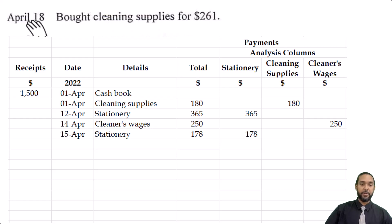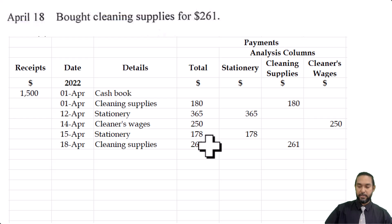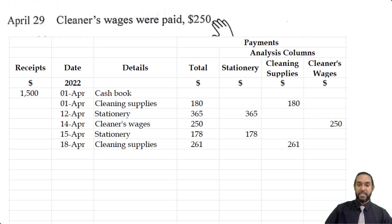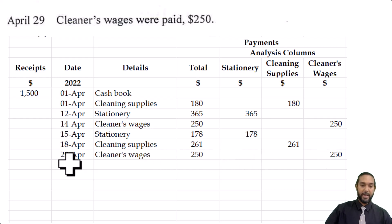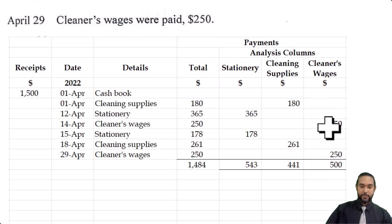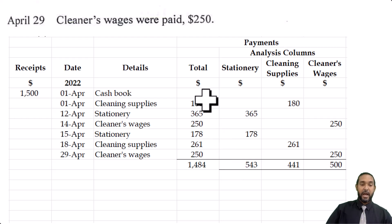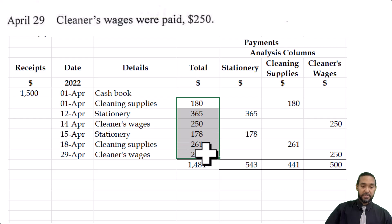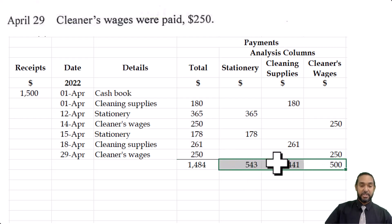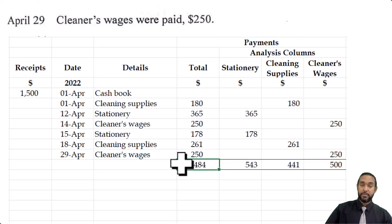On the 18th of April, cleaning supplies were bought for $261 — that goes in the cleaning supplies column, $261 in the total column, details 'cleaning supplies,' date April 18th. On April 29th, the cleaner's wages of $250 were paid — that goes under cleaner's wages column. When we total up each column: cleaner's wages $250 + $250 = $500; cleaning supplies $180 + $261 = $441; stationery $365 + $178 = $543. Adding all expenditure gives $1,484. This is a cross-check — the total column and the sum of all analysis columns must both equal $1,484. If they don't, something went wrong.